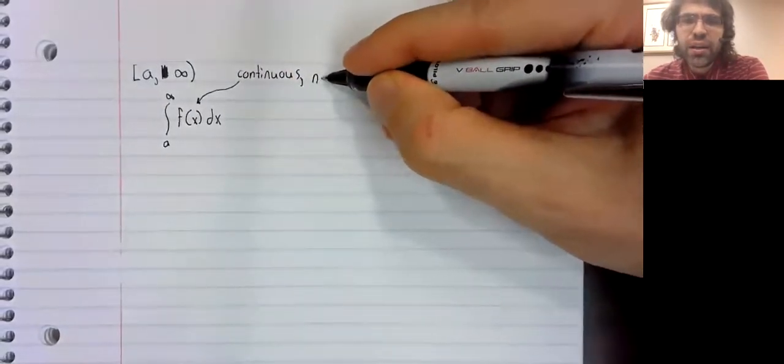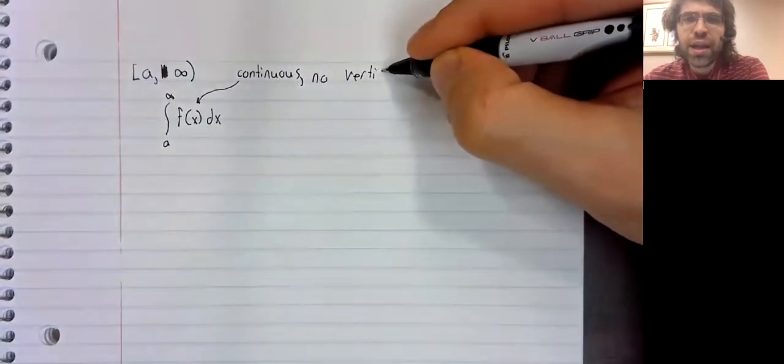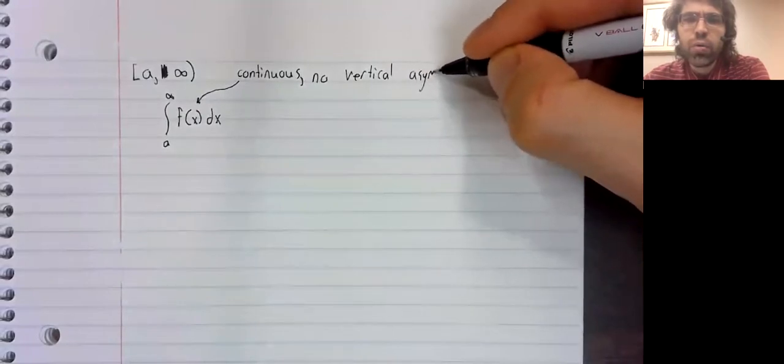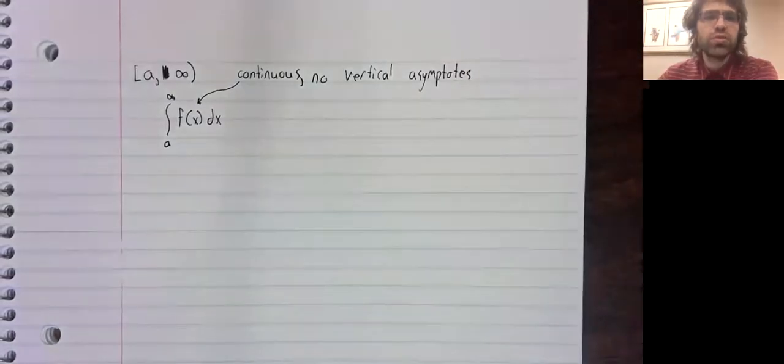And then in particular, that the function has no vertical asymptotes.